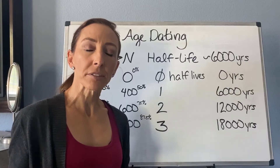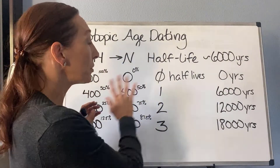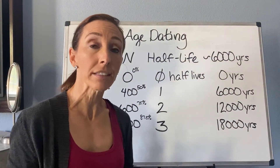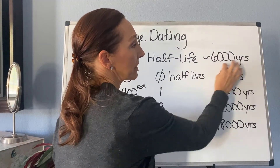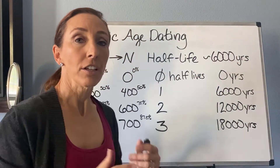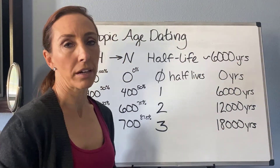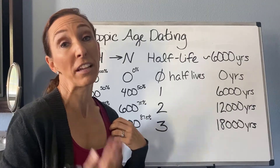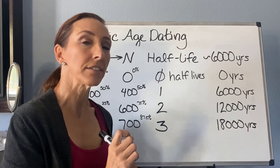Your lab manual will talk about how carbon dating has limits to it, and that's because the half-life is every 6,000 years. Eventually you get to a point where you can no longer measure that small, tiny amount that's left.